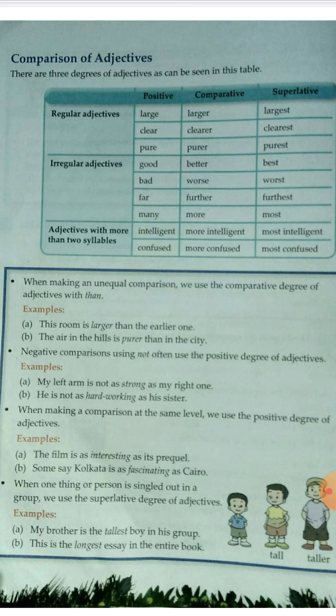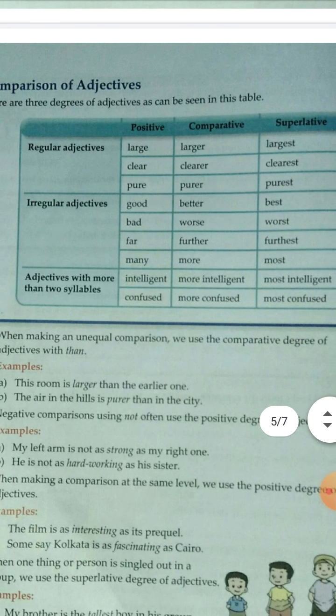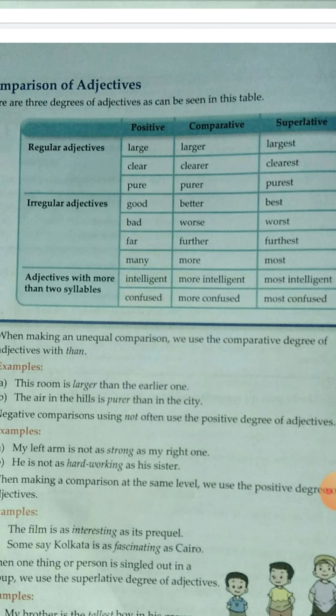In this table you can see regular adjectives, irregular adjectives, and adjectives with more than two syllables. Regular adjectives are those which have the comparative and superlative forms ending with '-er' or '-est'. For example: large, larger, largest; clear, clearer, clearest; pure, purer, purest. These words end with '-er' or '-est', which is why they are known as regular adjectives.